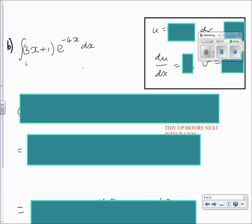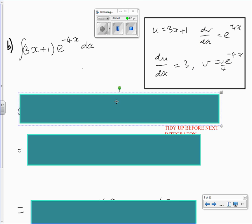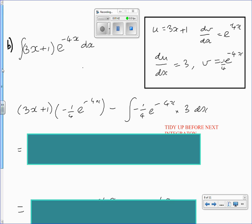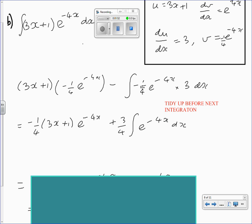You know how to differentiate and integrate both these functions, but 3x plus 1 becomes simpler when you differentiate it, so we'll take u as 3x plus 1. Substitute into the formula and again tidy up before the next integration.